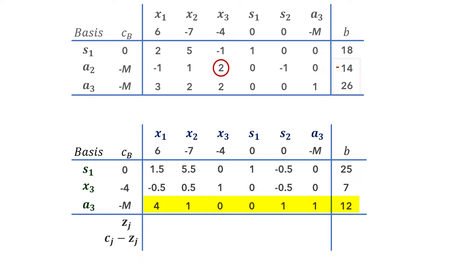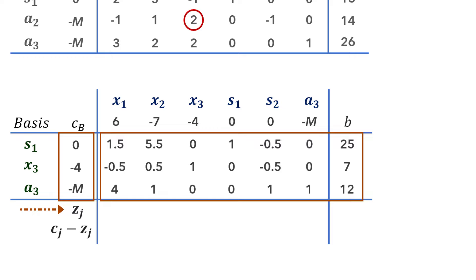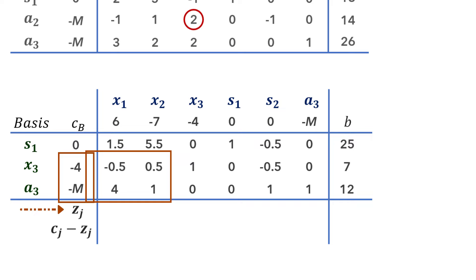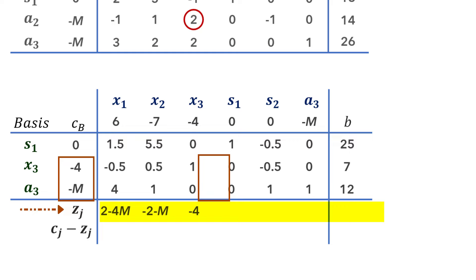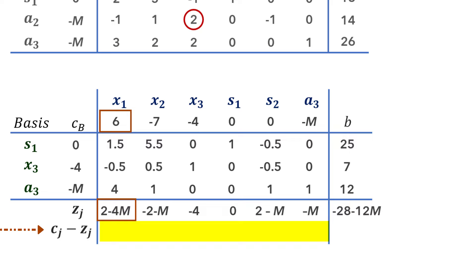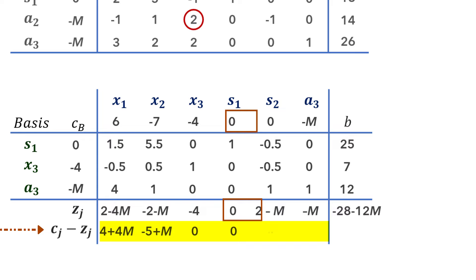Next we compute the Zj row entries using sum products of the Cb column and other columns. Since the top Cb value is 0, we ignore the first row. For the x1 column: negative 4 times negative 0.5 plus negative m times 4 gives 2 minus 4m. Then: negative 4 times 0.5 plus negative m times 1 gives negative 2 minus m. Next we have negative 4, then 0, then 2 minus m, and negative m. For the b column: negative 28 minus 12m. For the net evaluation row: 6 minus (2 minus 4m) = 4 plus 4m; negative 7 minus (negative 2 minus m) = negative 5 plus m; then 0, 0, negative 2 plus m, and 0. That completes the first iteration.